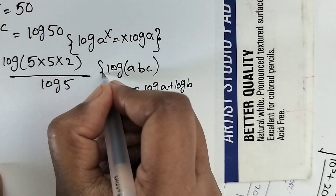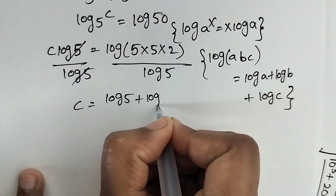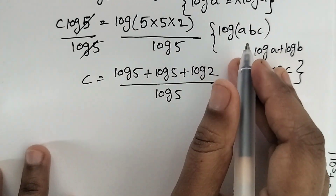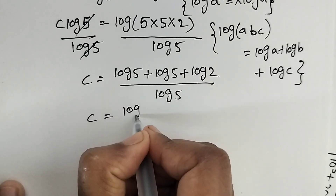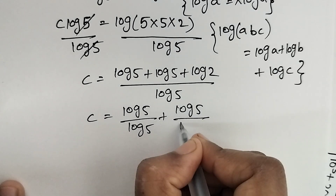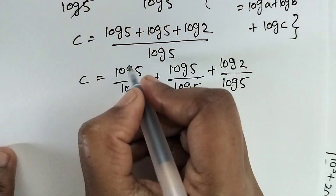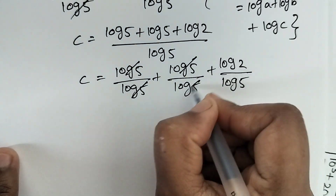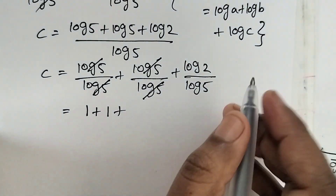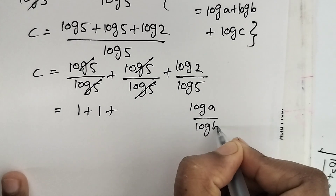Using the product formula, c equals (log 5 + log 5 + log 2) divided by log 5. Separating the terms: log 5 over log 5, plus log 5 over log 5, plus log 2 over log 5. The first two pairs of log 5 cancel, giving 1 plus 1. The remaining term log 2 over log 5 is in the form log_b(a).